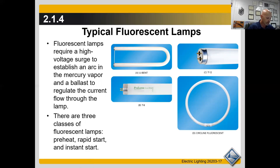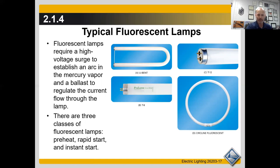Fluorescent lamps have two electrical requirements: a high voltage surge is needed to establish an arc in the mercury vapor to start the lamp, and once started, the gas offers decreasing resistance, so current must be regulated to match that drop. Unlike an incandescent with a tungsten filament, this gas doesn't have the same resistance, so it doesn't require as much energy to maintain the light. The ballast regulates voltage going in and out of the tube. Once the initial arc is created, the tube continues to work as long as voltage is applied.